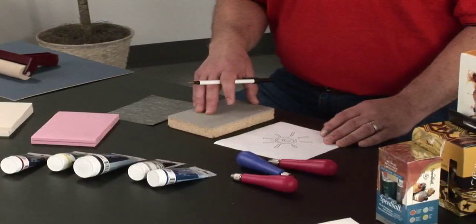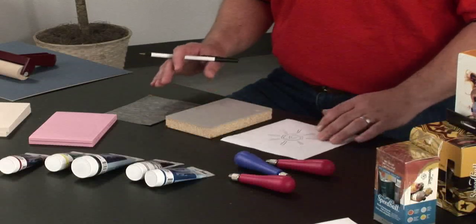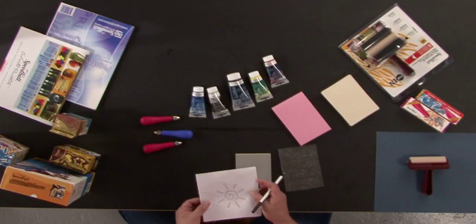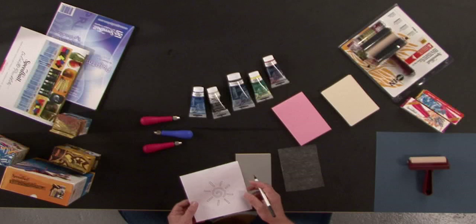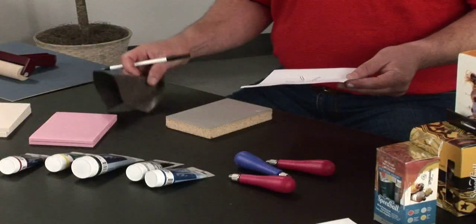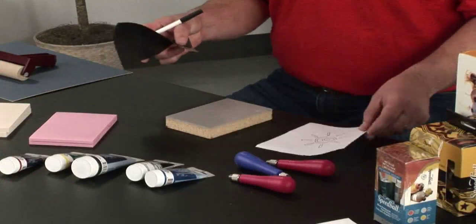We're going to start off by transferring an image to the linoleum block. Now you can simply draw your own image right on the block, or you can take an image that you've either downloaded as clip art or drawn yourself as a separate sketch, and using some graphite paper, you can transfer that image onto the block.